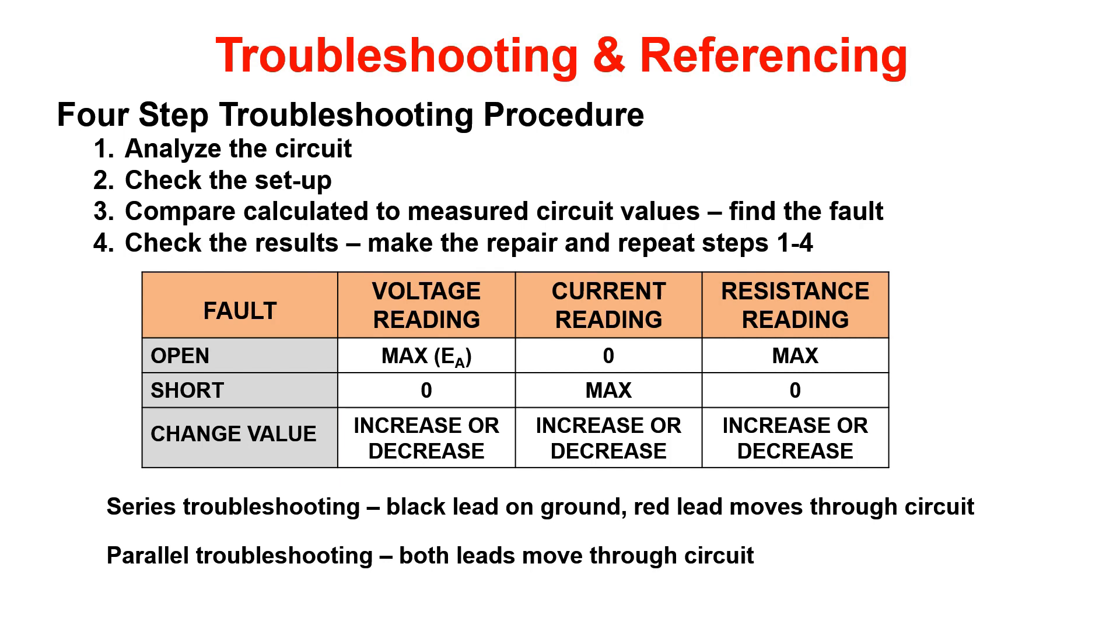For series troubleshooting, the black lead will stay on ground and the red lead will move through the circuit to measure values. For parallel troubleshooting, both of your leads will move through the circuit to take your measurements.